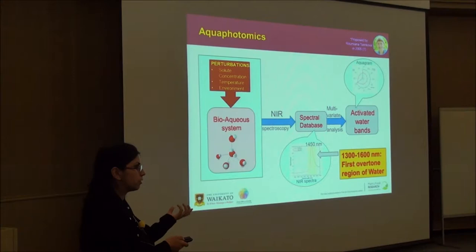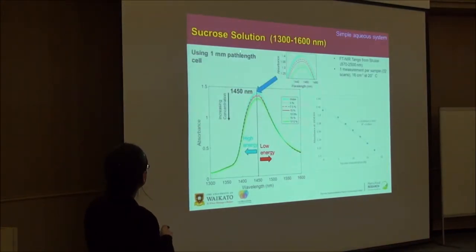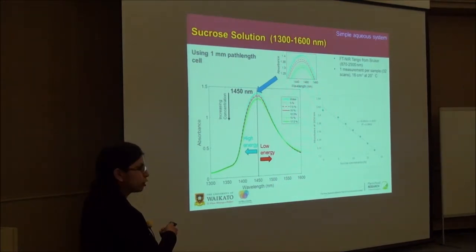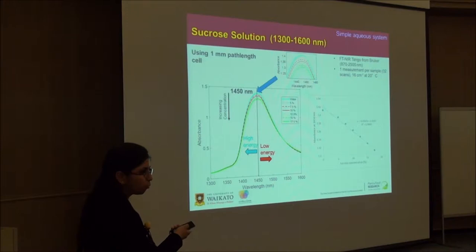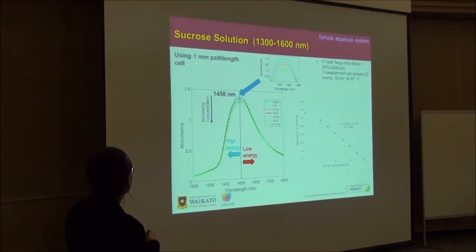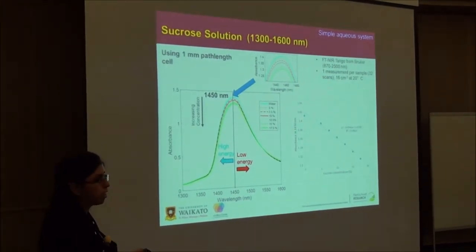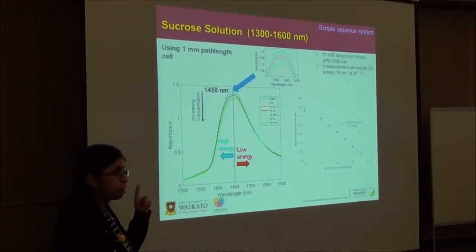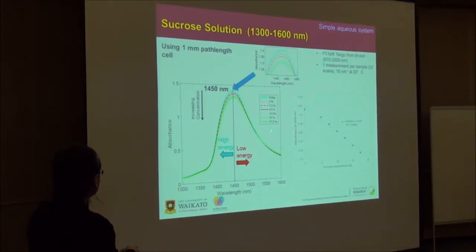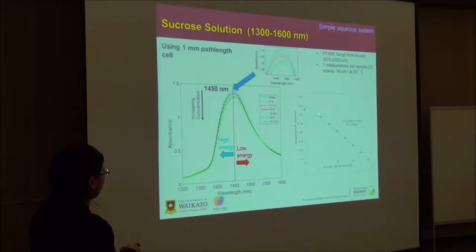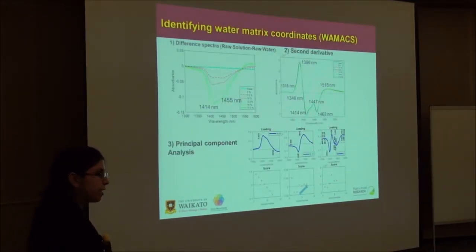I got an idea to try a simple aqueous system. I tried a simple sucrose solution with brix values similar to what we find in fruit, varying from 5 to 17.5%. I made the solution using a 1-millimeter path-length cell and the FT-NIR instrument at one temperature — temperature was not changed, only the perturbation was sugar concentration change. There was a peak at around 1450 nanometers in the first overtone region of water, and I was able to see a correlation — water absorbance was highest, followed by a decrease with increasing concentration.